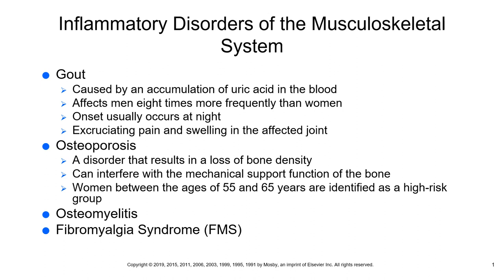During assessment, subjectively ask about lifestyle practices and complaints of pain, which typically worsens when sitting, standing, coughing, sneezing, or straining. Objectively, assess for what is called a dowager's hump — a rounded hump in the upper back due to bone loss. It is a spinal deformity, and height loss occurs due to repeated spinal and vertebral fractures. Dowager's hump and kyphosis — rounding of the thoracic spine — are sometimes used interchangeably.